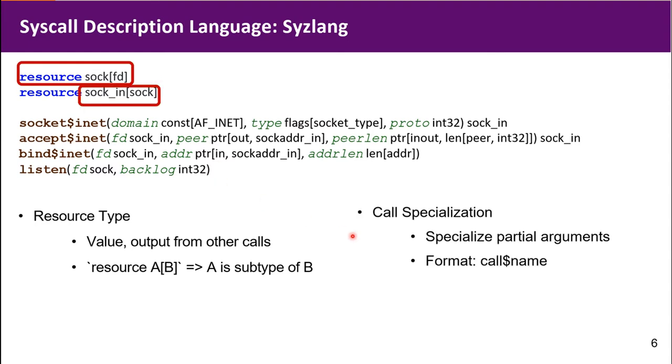Another feature is called specialization. We can use this feature to specialize partial arguments of a syscall. Here is another example. We specialize the first two arguments of a socket.